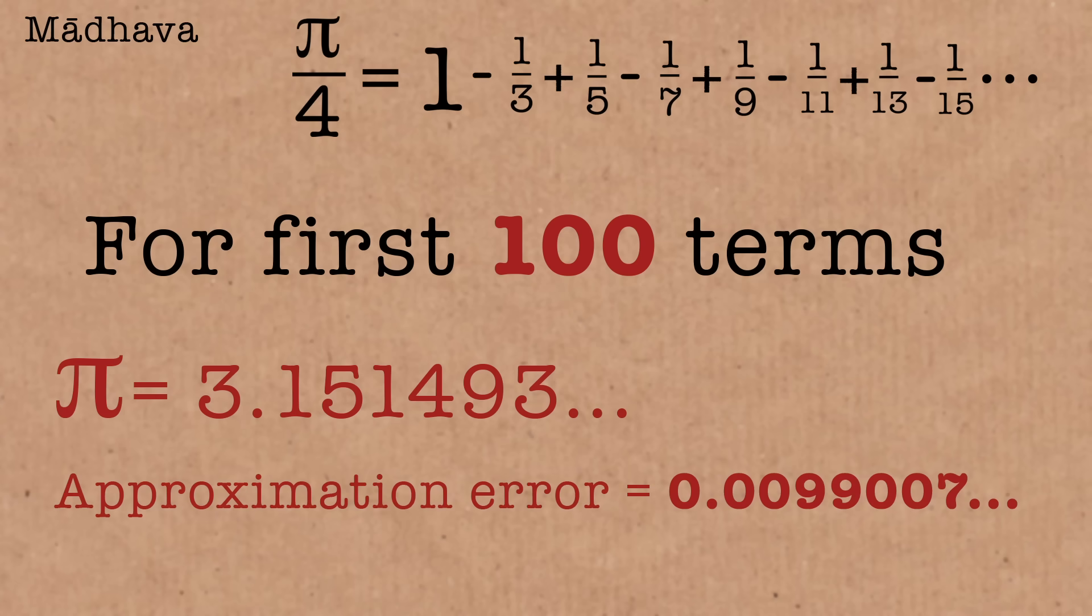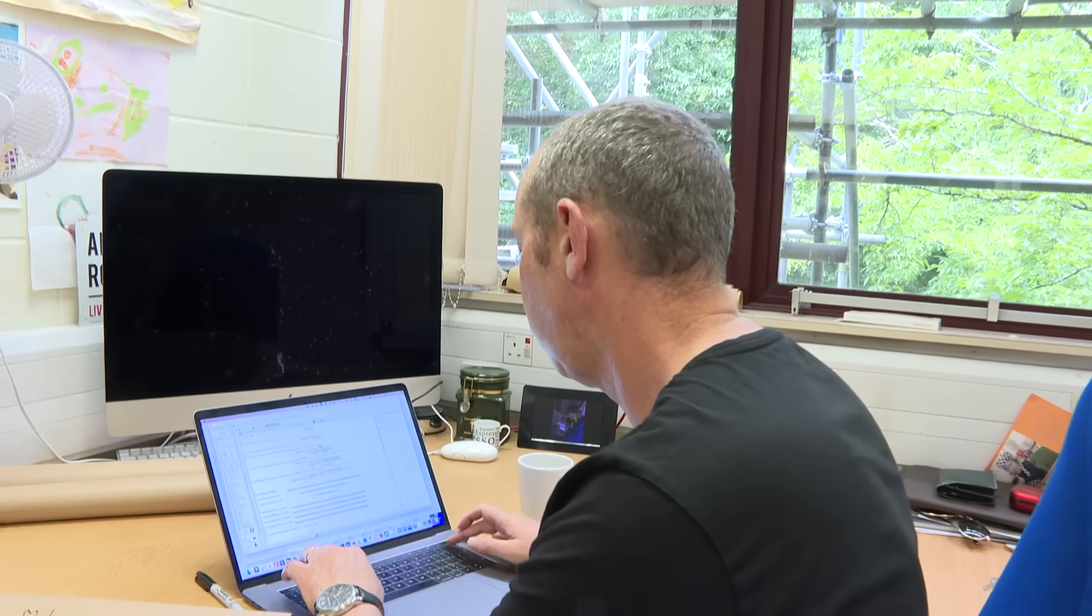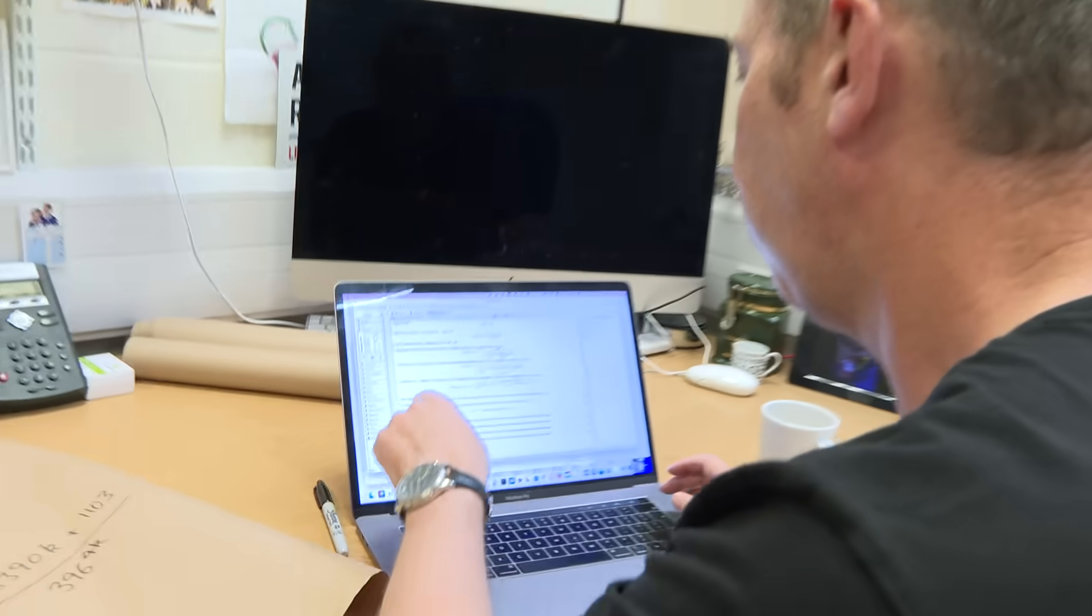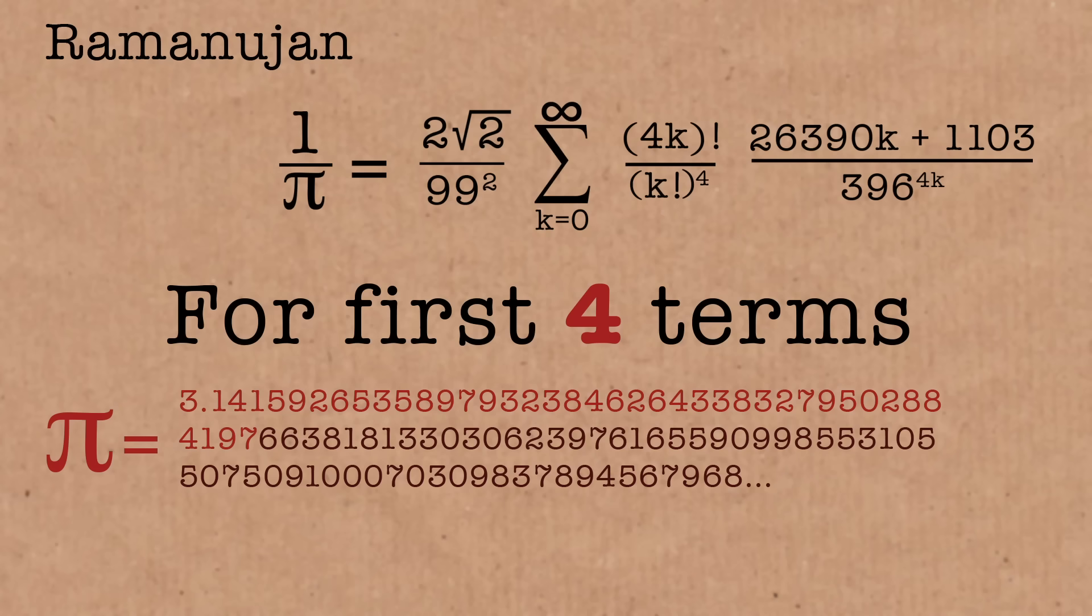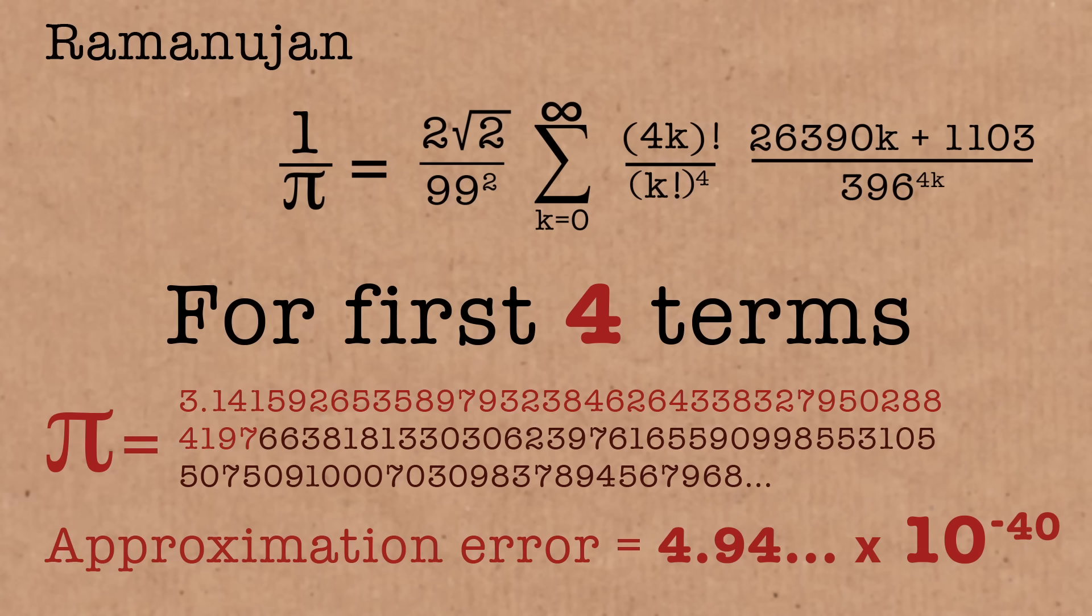So what I'm going to do is take the first four terms in the Madawa series and get to within 0.198 of Pi. So it's not super accurate, but it's not terrible. If I take the first five terms, it goes to within 0.16. For Madawa with 100 terms, I get to within 0.0099. Close, but let's compare this to Ramanujan. Four terms Madawa gets within 0.2. Four terms Ramanujan, check that out, gets within 10 to the minus 40. It's incredible.